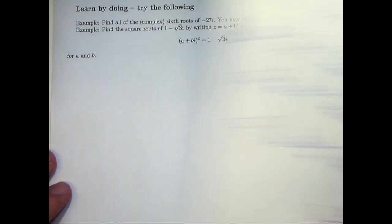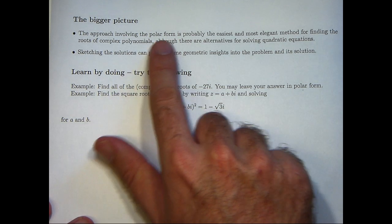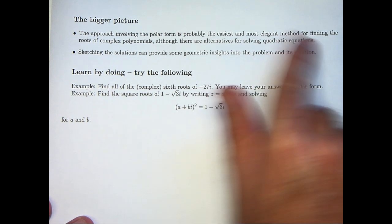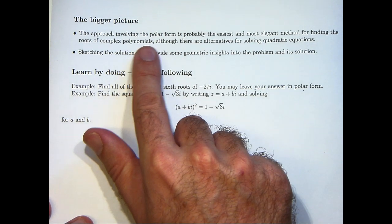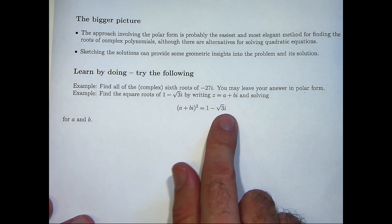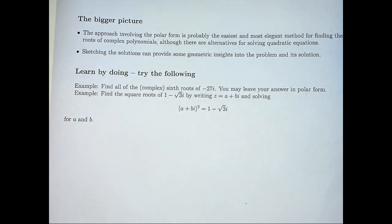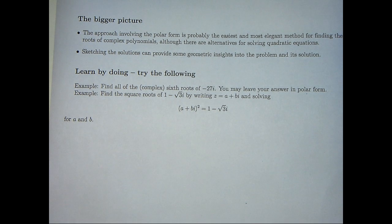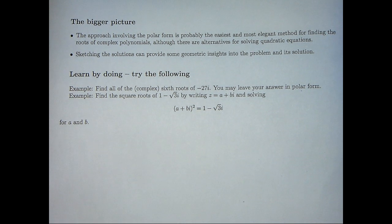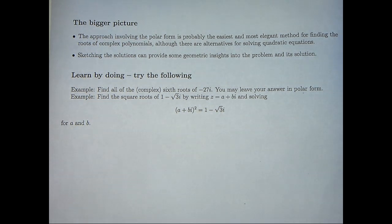Let's look at the bigger picture. What are some ideas that you can use to solve all sorts of problems? This approach involved the polar form, and it's probably the easiest and most elegant method for finding roots of complex polynomials. Although you can use an alternative method for solving quadratic equations. Sketching the solutions can provide some geometric insights into the problem. Always remember you don't get good at mathematics unless you do mathematics. You need to learn by doing. So I've left some examples here for you to do to further build your knowledge and your intuition.